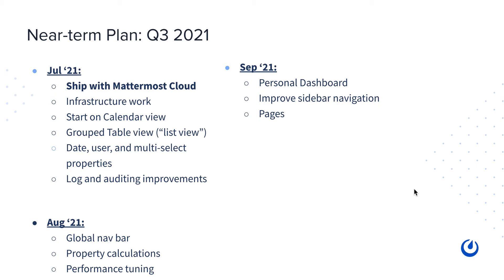Looking at the next three months: in July, we intend to enable FocalBoard on Mattermost Cloud, which involves a whole bunch of infrastructure work. We also want to start work on additional views such as the calendar view and the group table view — a more powerful alternative to a basic list view. Additional properties are also coming: date, user, and multi-select properties, as well as infrastructure improvements such as logging and auditing.